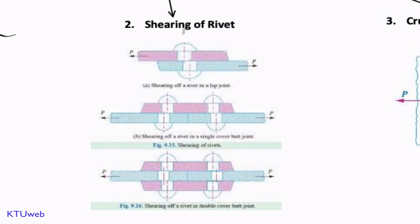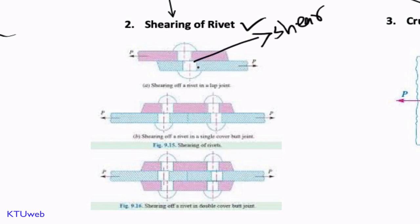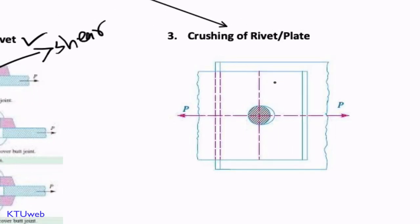The second category is shearing of rivet. Here the plate is very strong — it neither shears nor tears apart. The failure occurs due to shear within the shank of the rivet, causing the joint to fail. The third category is quite different: failure occurs due to crushing of the rivet or sometimes crushing of the plate. Both cases are classified under this category.